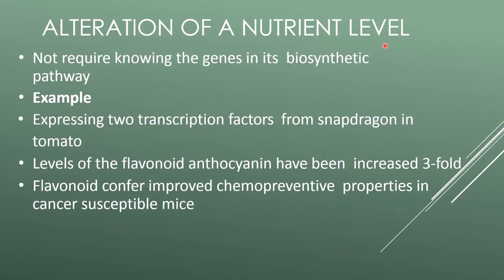Alteration of nutrient level does not always require knowing the gene in its biosynthetic pathway. For example, expressing two transcription factors from snapdragon in tomato increased the level of flavonoid anthocyanin threefold. Flavonoids confer improved chemoprotective properties in cancer-susceptible mice.